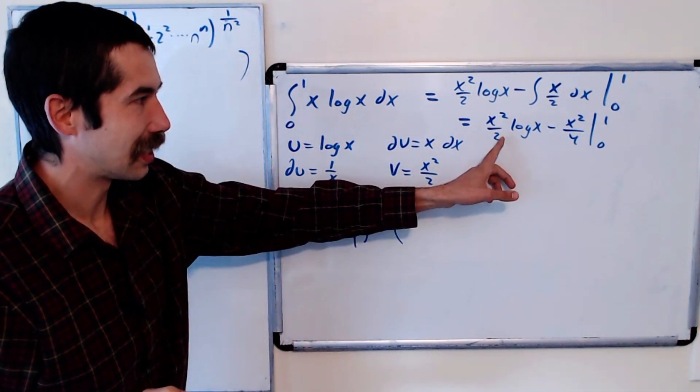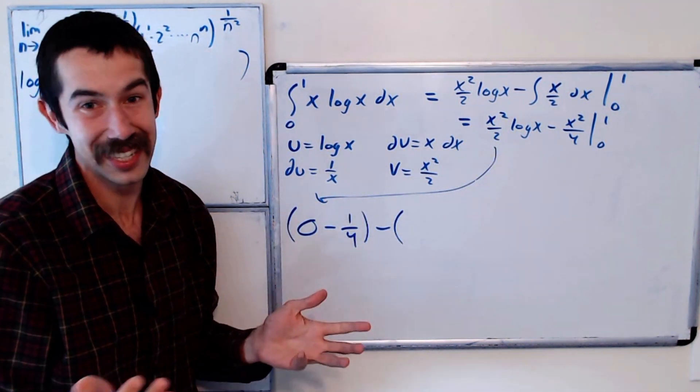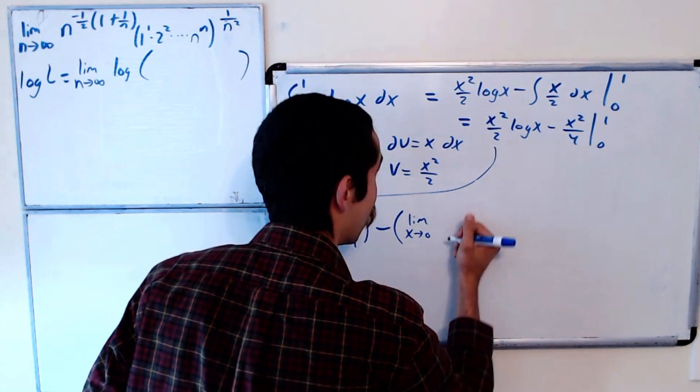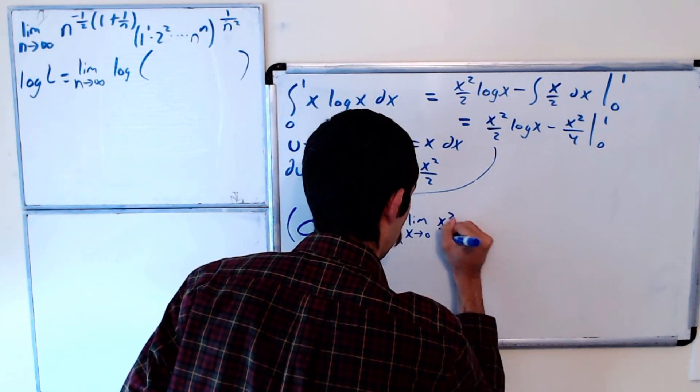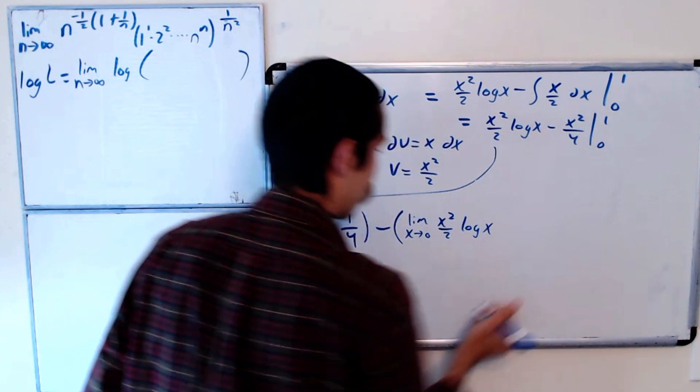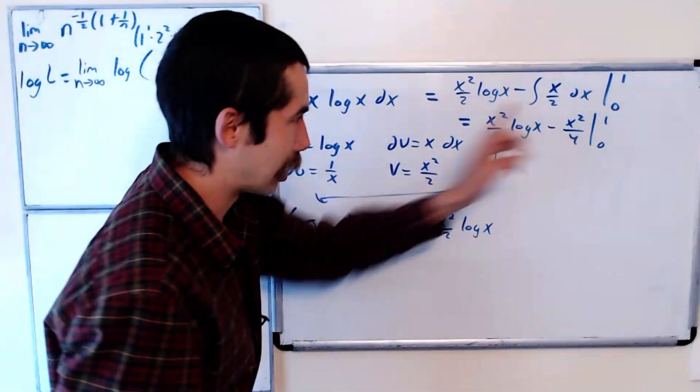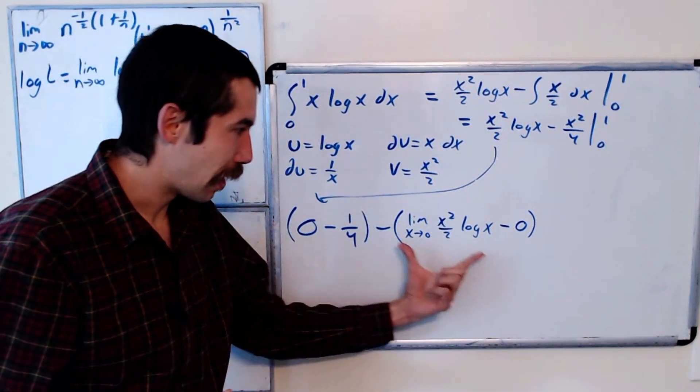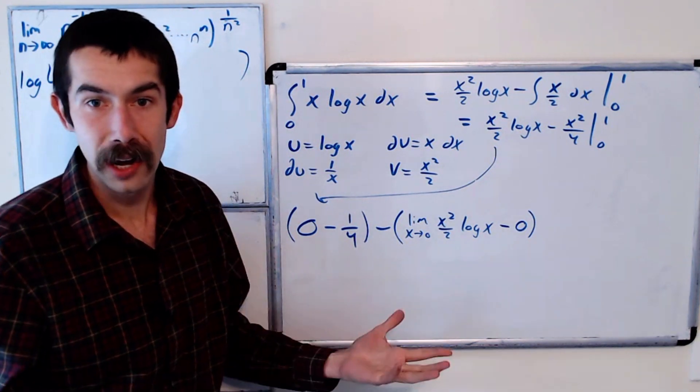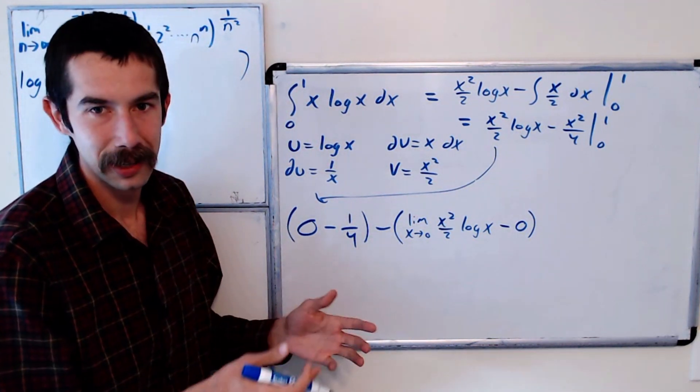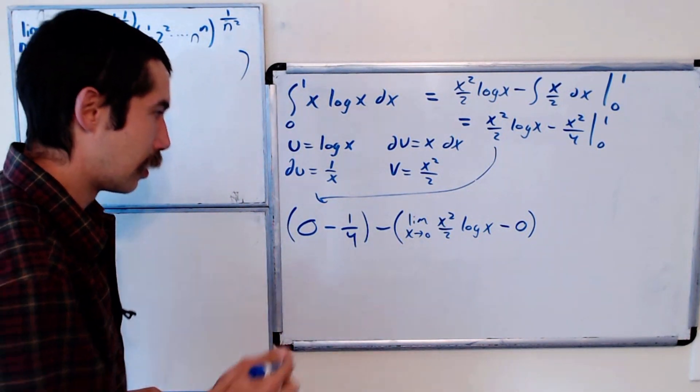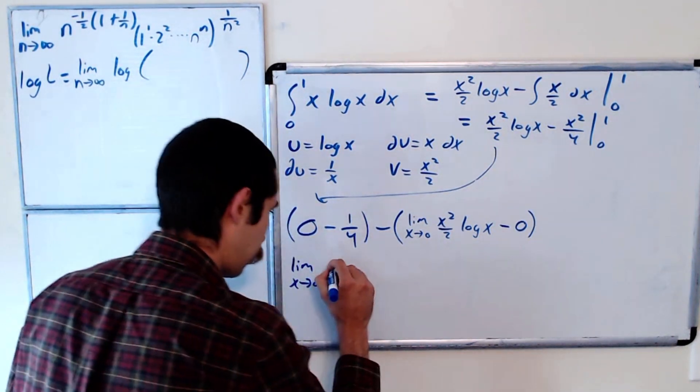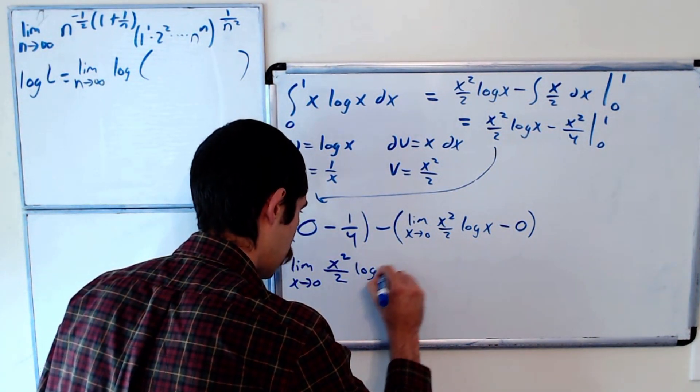Okay, and when we plug in 0, we get, ooh, 0 log of 0. That's going to require a limit. So let's do the limit as x goes to 0 of x squared over 2 log x. We still need to figure that out. And then when we plug in 0 here, we get 0 minus 0. Okay, we're almost done. If we could evaluate this limit, then we're done, right? Because then we know what the integral's value is, and then we know what this limit's value is up here.